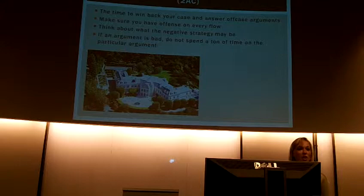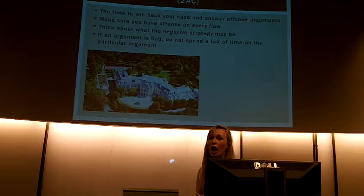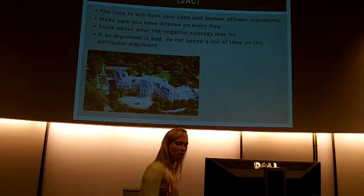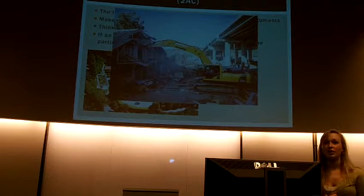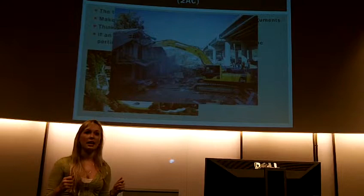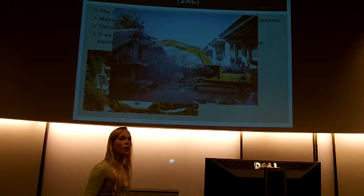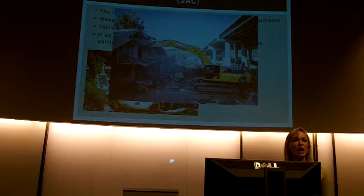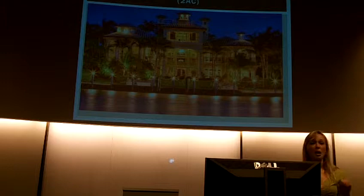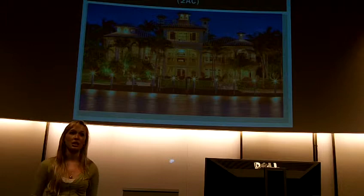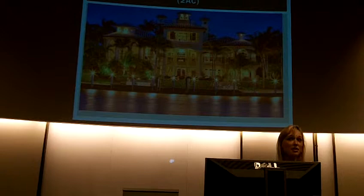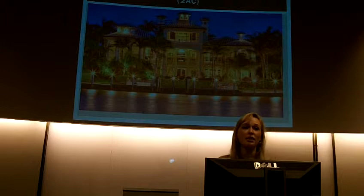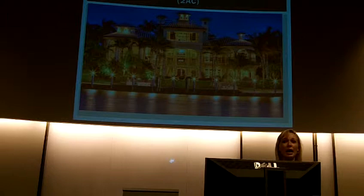Here's a picture of a very nice mansion — this is your 1AC affirmative house. You've constructed it beautifully with great advantages, solvency evidence, and impacts. But the 1NC comes in with a bulldozer, trying to rip it down with case arguments and counter-arguments. The 2AC is the time to not only rebuild your house, but also re-raise by creating offense on different off-case positions. Not only do we get a new mansion that's beautiful, but now it's on the beach — the 2A needs to rebuild in a way that is strategic and better for the affirmative team.